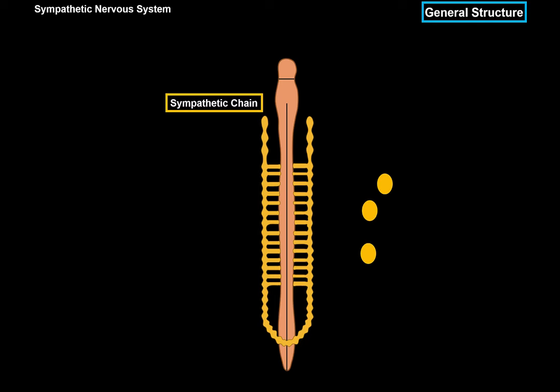This chain receives nerve fibers from the thoracolumbar area of the spinal cord. Some sources write C8 to L2, others write T1 to L2 — take it with a grain of salt, but you're never wrong when you say thoracolumbar region. Fibers may go up, they may go down, synapse with nuclei at the same level, or they may leave as splanchnic nerves and synapse with the prevertebral ganglia.